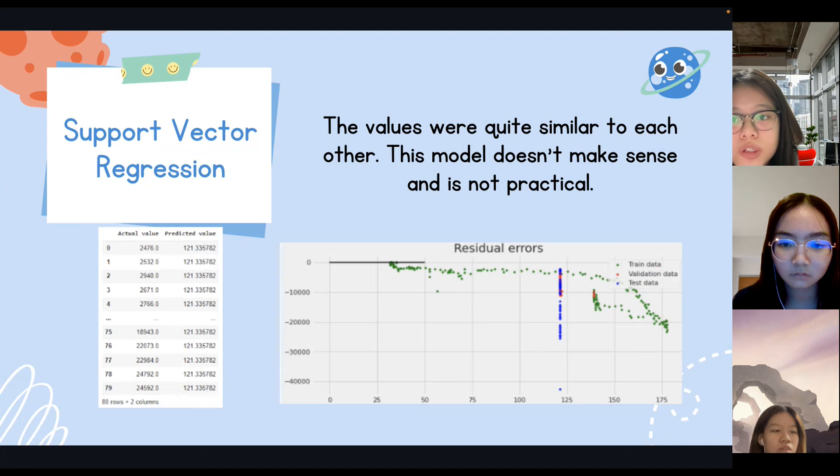This slide represents the performance of support vector regression. The MSE of this test set is quite bad and the value of each data in the test set is too similar. We assume that the dataset that we use for the machine learning might be too big, so the performance of this model might not be efficient enough.